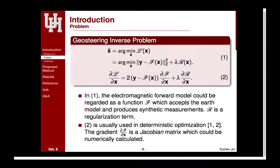We can build an EM forward model function f that accepts the Earth model and produces 92 measurement values. The function f is built with the Maxwell equations. In our case, we only know the measurements but we don't know the Earth model x. To recover the Earth model x, we need to perform optimization. In the optimization we often use the first-order gradient, described by equation two, where the partial derivative of f over x is the Jacobian matrix of the forward model.